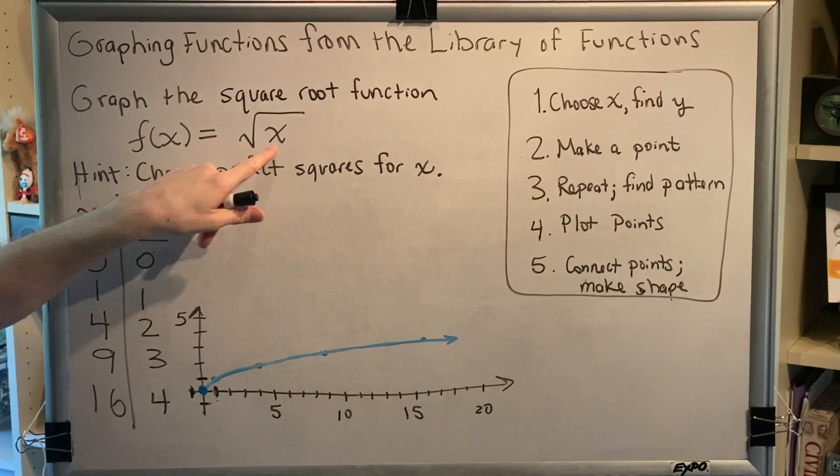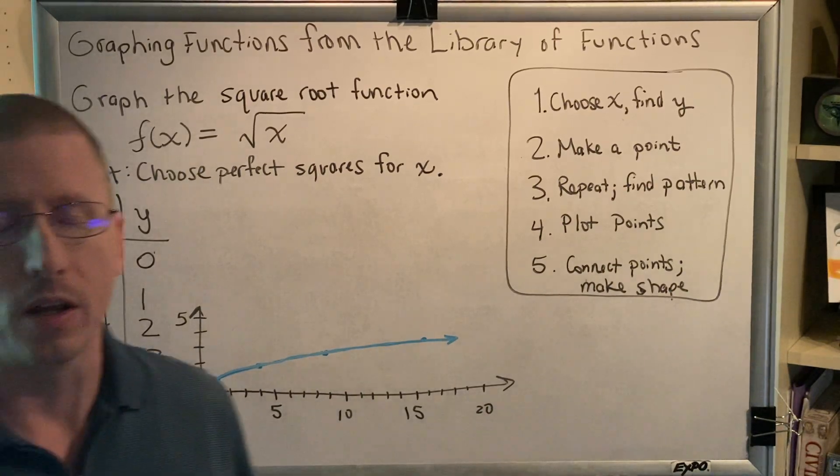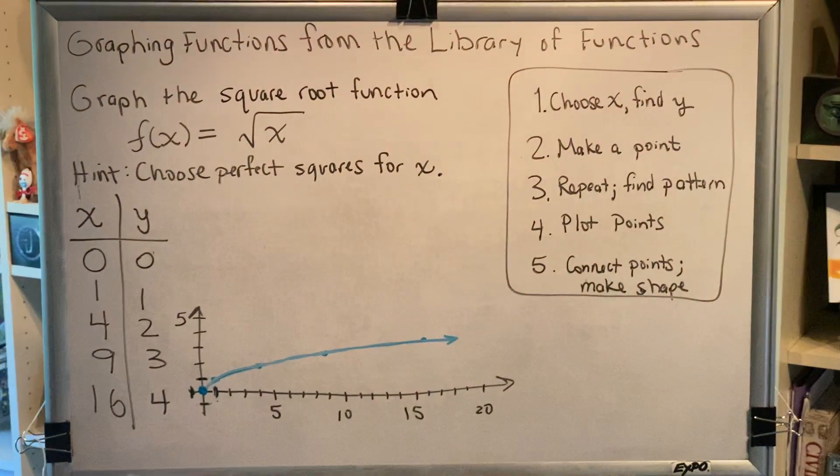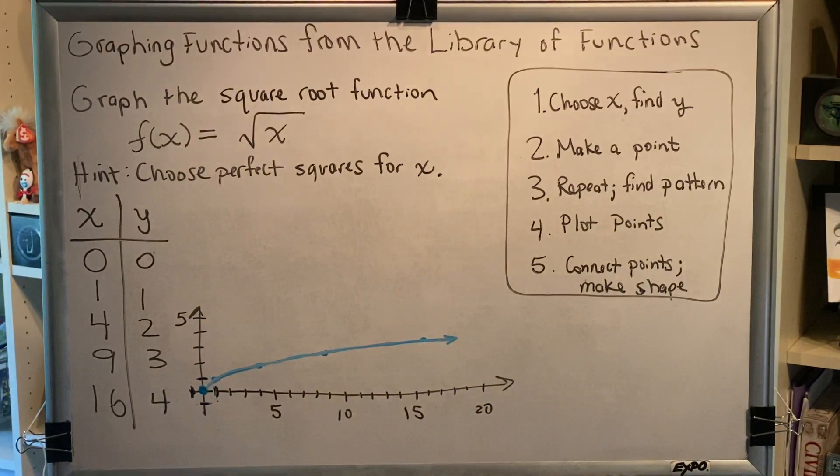For example, if x was negative 1, you'd get the square root of negative 1, which is i, i for the imaginary unit, which we will not be graphing in college algebra. Alright, there we go. We have a graph of the square root function.